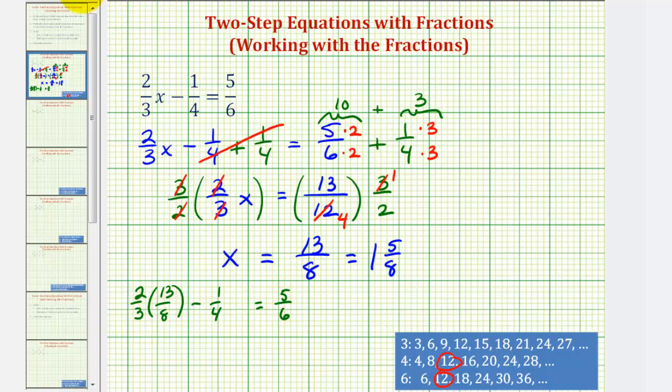We'll multiply first. Notice that two and eight simplify. There's one two and two, and four twos in eight, so we have thirteen-twelfths minus one-fourth. If we want a denominator of twelve, we'd multiply by three over three. So we have thirteen-twelfths minus three-twelfths.